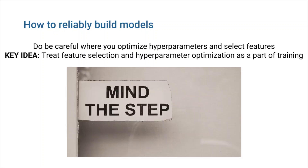Do be careful where you optimize hyperparameters and select features. When carrying out hyperparameter optimization and feature selection, it is important to treat them as part of model training. A particularly common error is to do feature selection on the whole dataset before model training begins, which will result in information leaking from the test set into the training process. You should use the same data for training as well as model optimization or feature selection. One way to do this is called nested cross-validation, which includes hyperparameter optimization and feature selection as an additional loop within the main cross-validation loop.